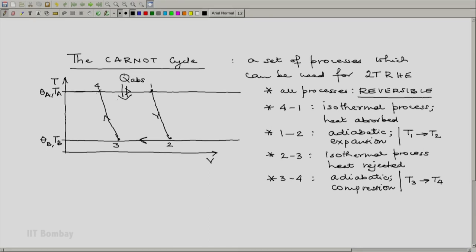During the process 4-1, there is heat absorption from the high temperature reservoir. During the process 2-3, there is heat rejection to the low temperature reservoir.